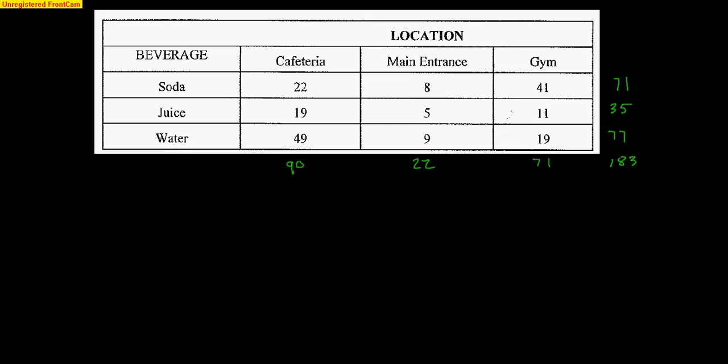So here's the chart that I want to use. You're going to see a chart like this come up quite a few times on your midterm. So here's the idea, right? Basic two-way table. So where was the beverage purchased in the cafeteria vending machine, the main entrance vending machine, or the gym vending machine? And what type of beverage was purchased? Soda, juice, or water?